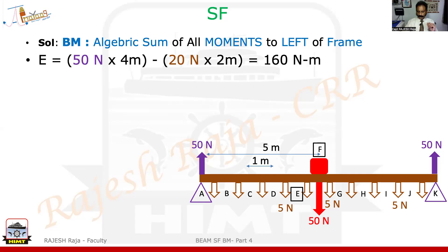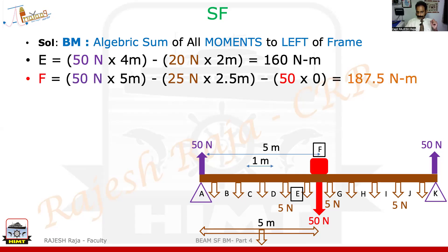At Foxtrot, using the shortcut method with a diagram: Alpha is 5 meters away, so the reaction is 50 into 5 going upwards. For the body weight, 5 meters of homogeneous beam means 25 Newtons total, acting at center of gravity 2.5 meters from Foxtrot — so 25 into 2.5. Please remember at Foxtrot I have a concentrated load of 50 Newtons but there is no lever. So the answer is 187.5. I have highlighted 187.5 because this is the peak value of the BM.